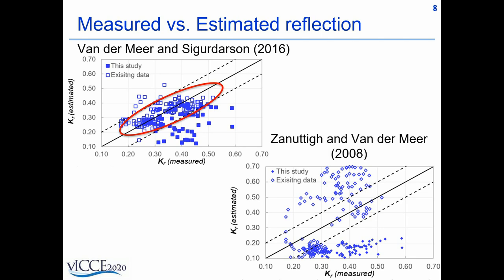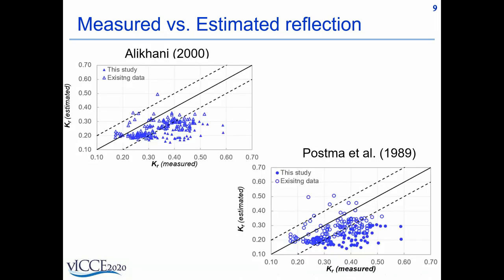The data in this study is mostly with emerged berms as it is commonly encountered in practical designs. The older formulas were developed from limited or no data on berm breakwater, obviously showing a large scatter, and wave reflections are underestimated which can be dangerous in terms of affecting the overall performance of the structure.